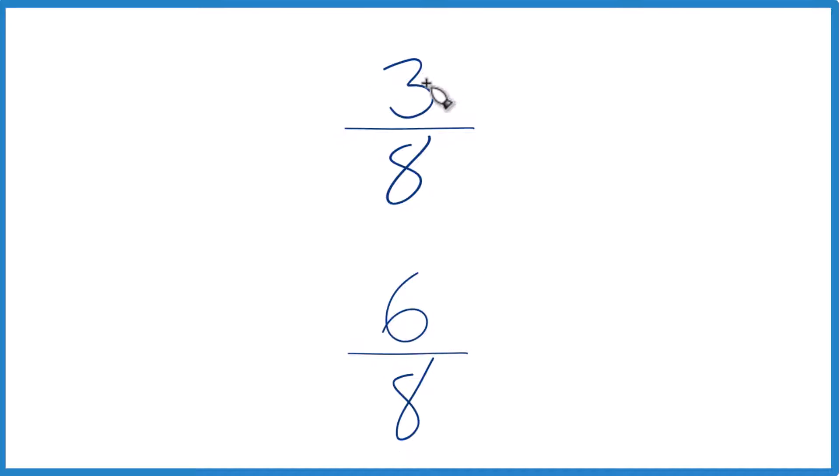First off, you could divide 3 by 8 on a calculator, get a decimal, divide 6 by 8, get a decimal, and figure out whether 3 eighths is greater than, less than, or equal to 6 eighths.